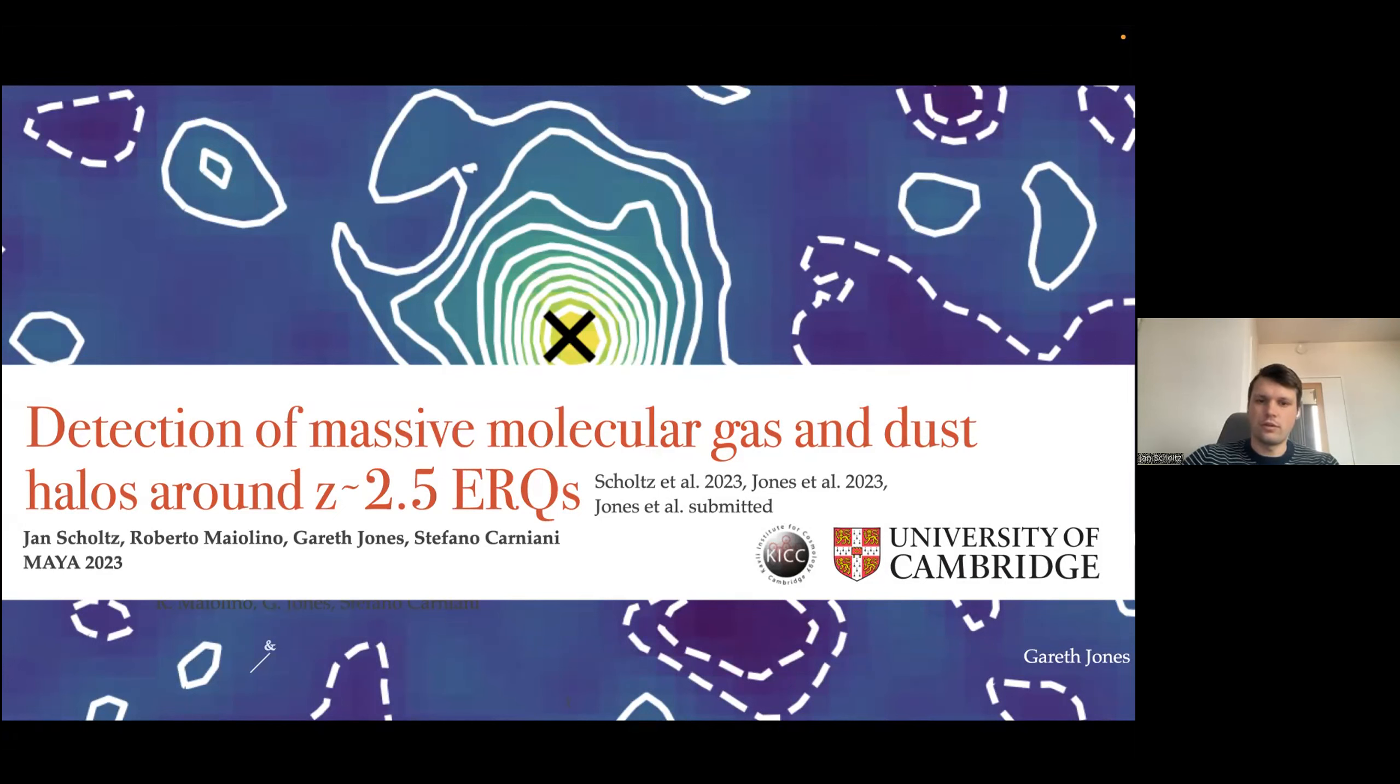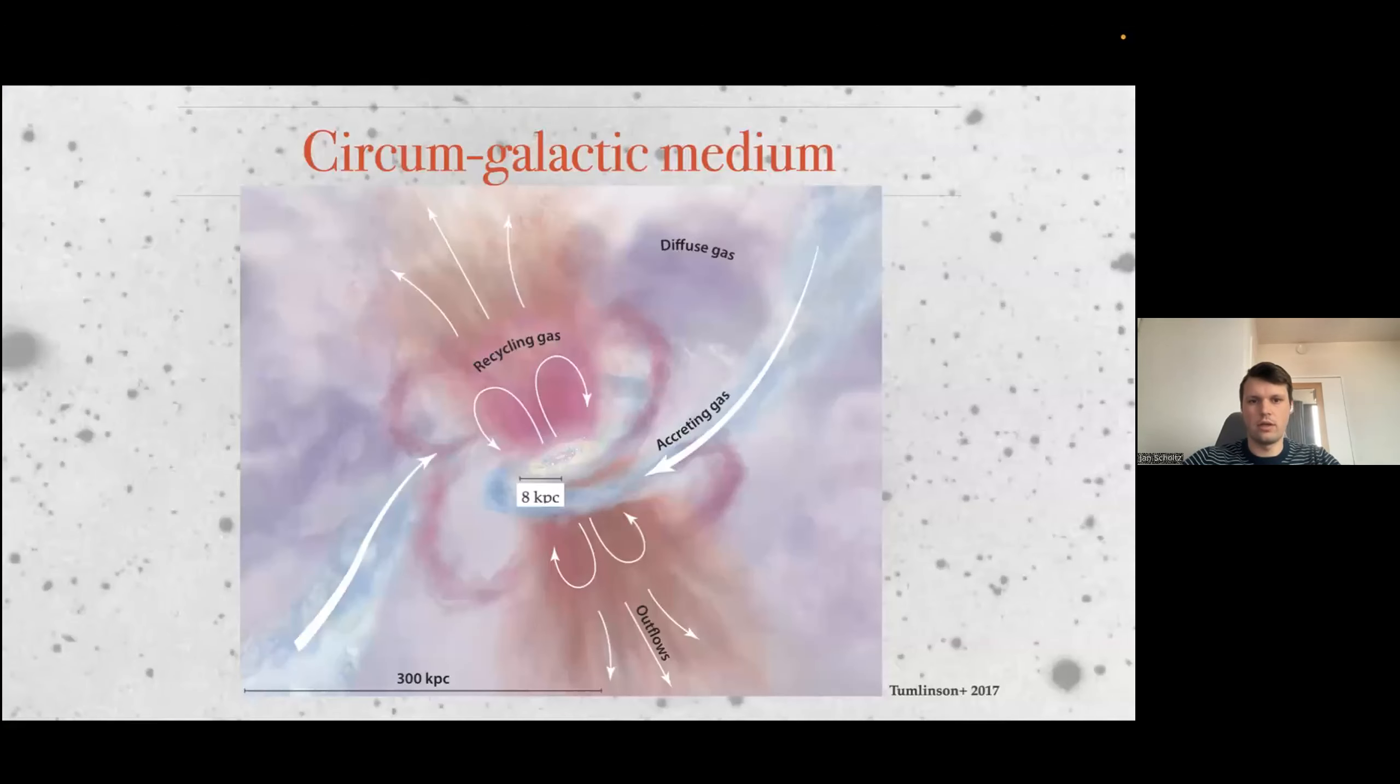So first of all, why should we care? The circumgalactic medium is this interchange between what's happening in the galaxy and what's happening in the universe on a larger scale. This is the famous image from Tumlinson 2017, and you see that you have a galaxy in the middle and you have pristine gas accreting from the IGM onto the galaxy.